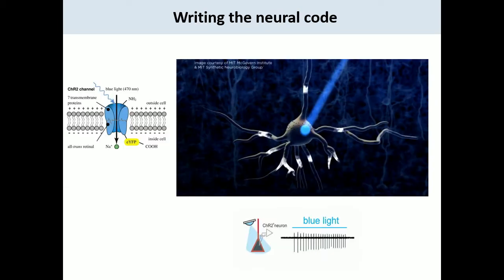To write the neural code, we use a technique called optogenetics — a powerful approach where you express a light-sensitive ion channel, in this case channelrhodopsin or variants, in neurons, making them very sensitive to light. However, you can't simply shoot a blue laser beam into scattering tissue like the mammalian brain. The solution is to require multi-photon light, at least in the upper layers of the cortex. We had a number of key challenges to overcome, and I'm going to show you the results.